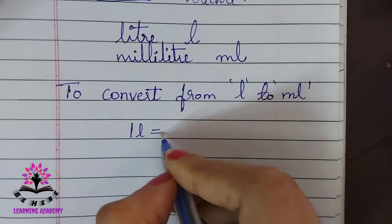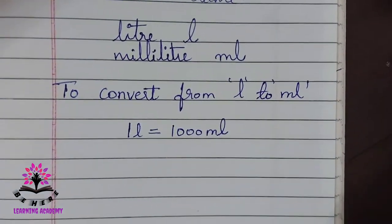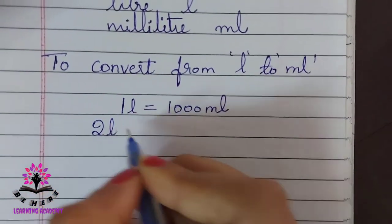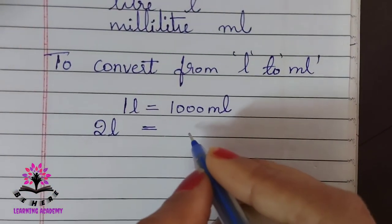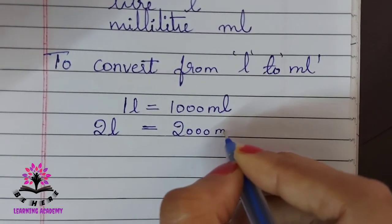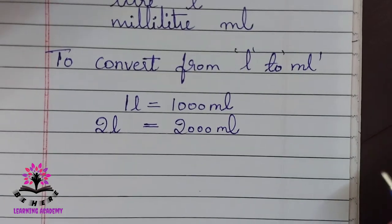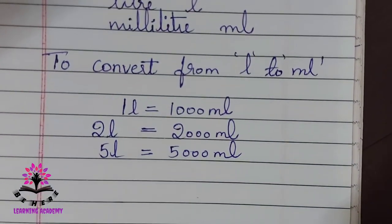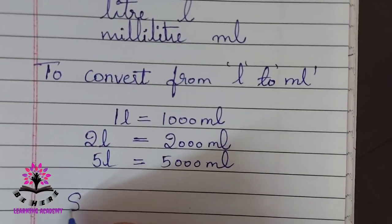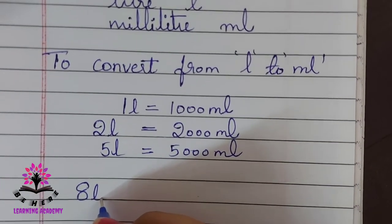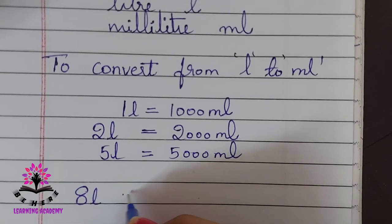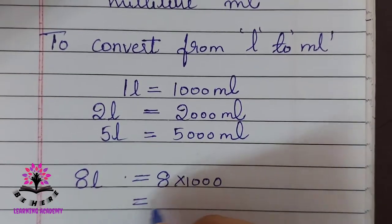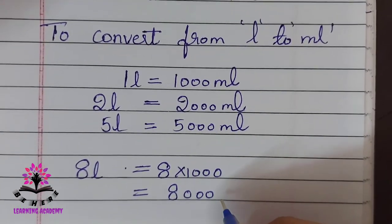One liter is equal to 1000 milliliters. So 2 liters equals 2000 ml, and 5 liters equals 5000 ml. To convert 8 liters: write 8 and multiply by 1000 — 8 ones are 8, add three zeros, giving 8000 ml.